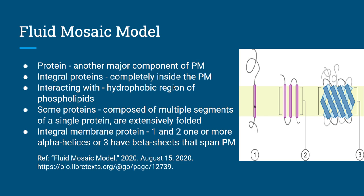Now let's look at the proteins. There are integral proteins that are completely embedded inside the membrane, interacting with the hydrophobic region of the phospholipids. Some proteins are composed of multiple segments of a single protein and are extensively folded — for example, number three here is a beta sheet, while numbers one and two are alpha helices. These proteins are very important in cell signaling pathways as well as cargo transportation from inside and outside the cell, acting like passport control officers.